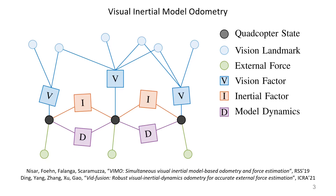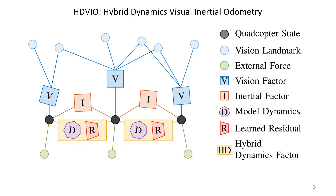Despite working well in many situations, the performance of these methods degrades if the model mismatch is large — for example, at high speed — or if continuous external disturbance, like continuous wind, is present.